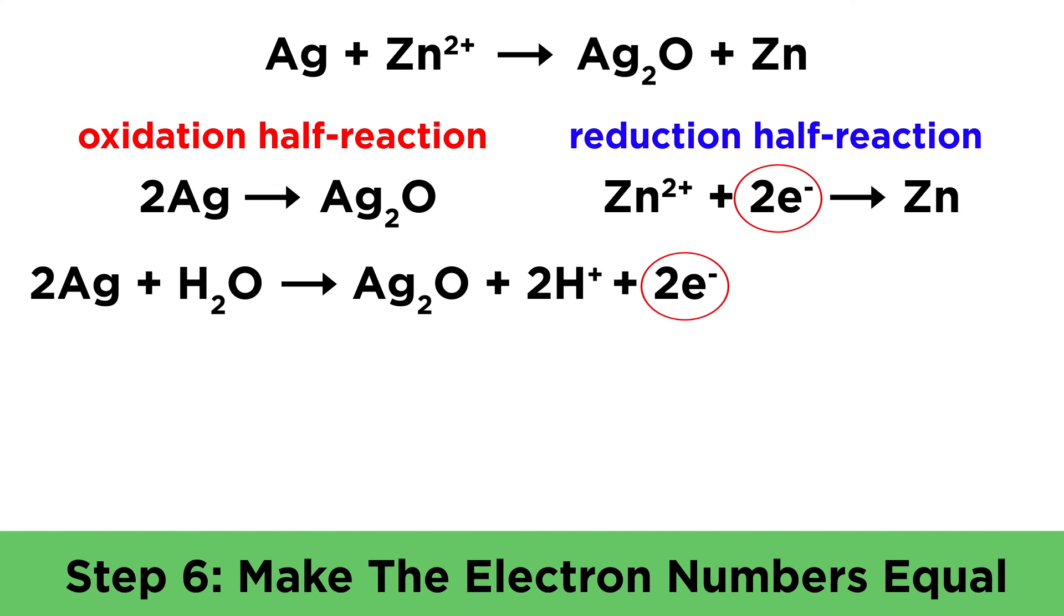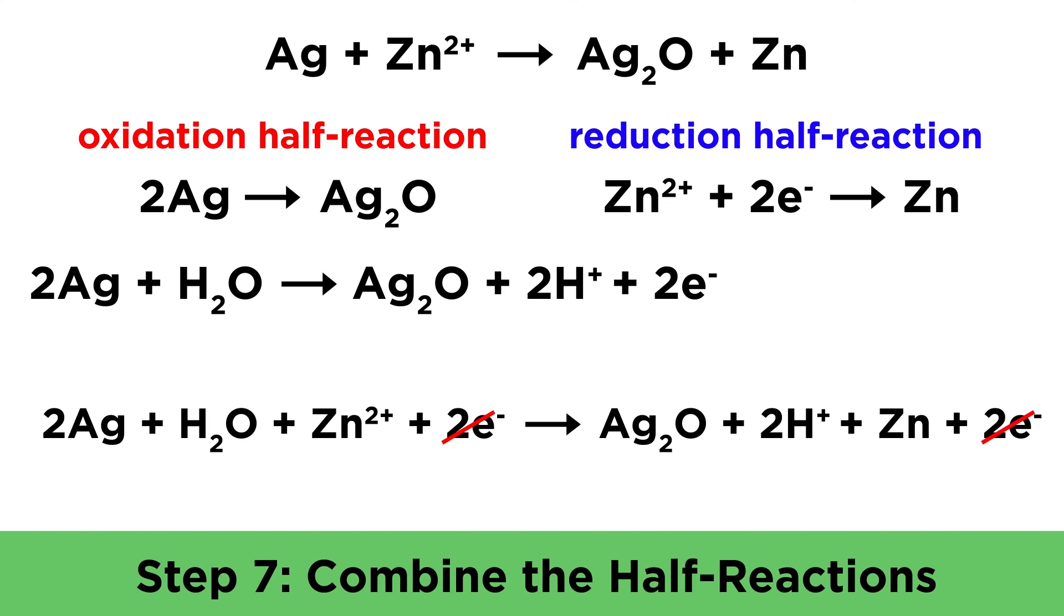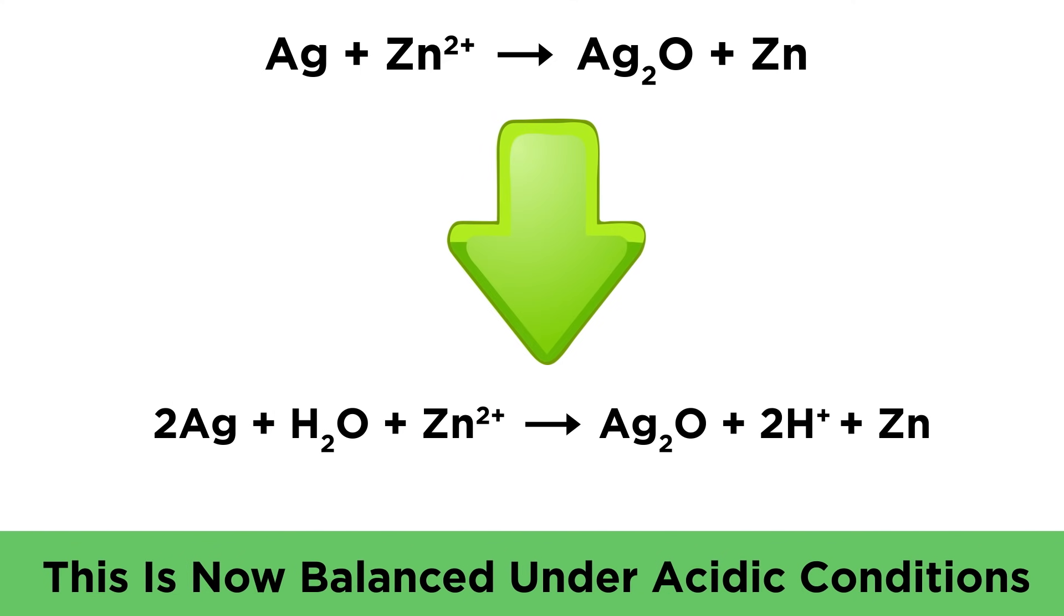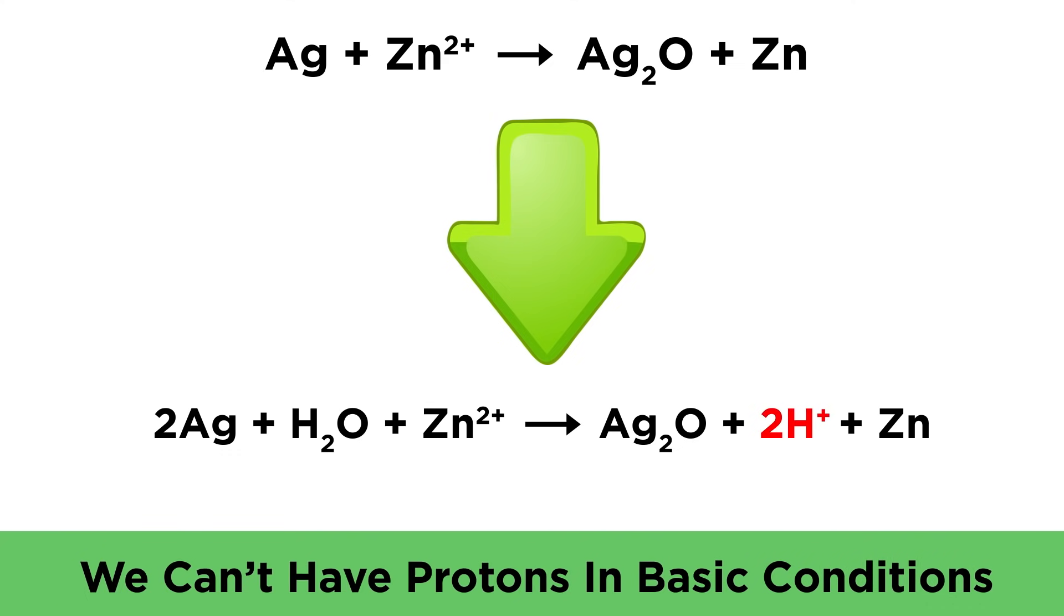Because the number of electrons in each half reaction is equal, we can go ahead and combine them, cancel out the electrons, and we get this. If conditions were acidic, we would be finished, but since they are basic, there is a little more work to do, because it doesn't make sense to say that protons exist in basic solution.